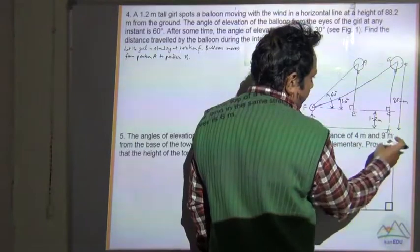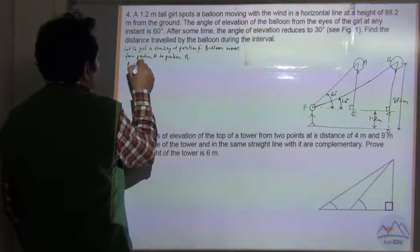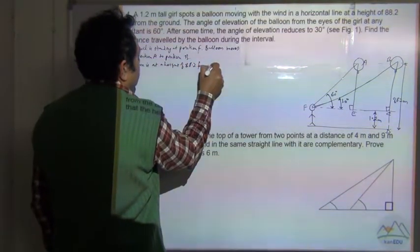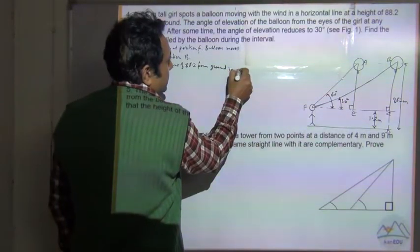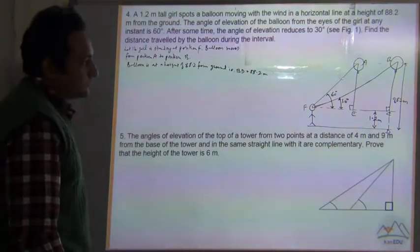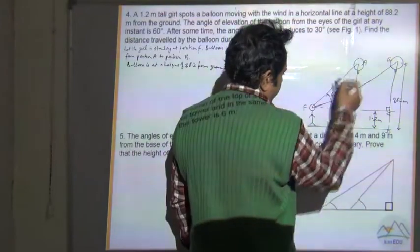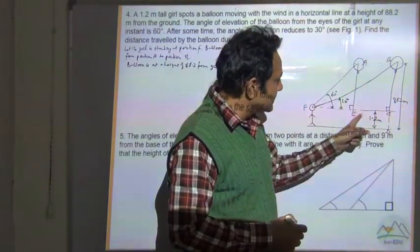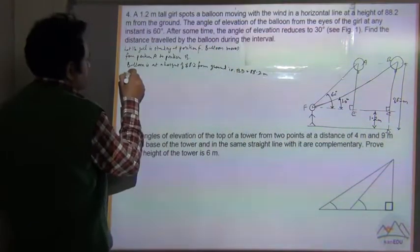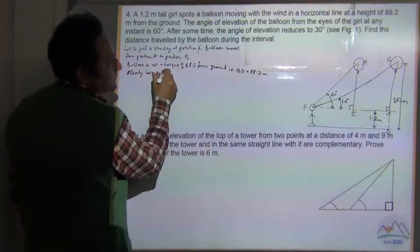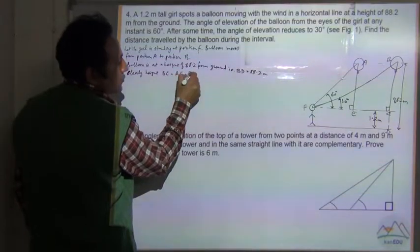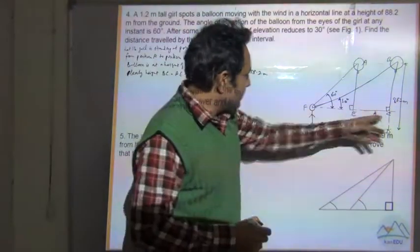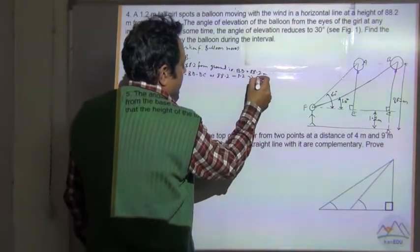The balloon is at a height BD from the ground, that is BD = 88.2 meters. The height BC = AE = BD minus DC. BD is 88.2 minus CD, where CD equals the height of the girl which is 1.2 meters. So this becomes 87 meters.